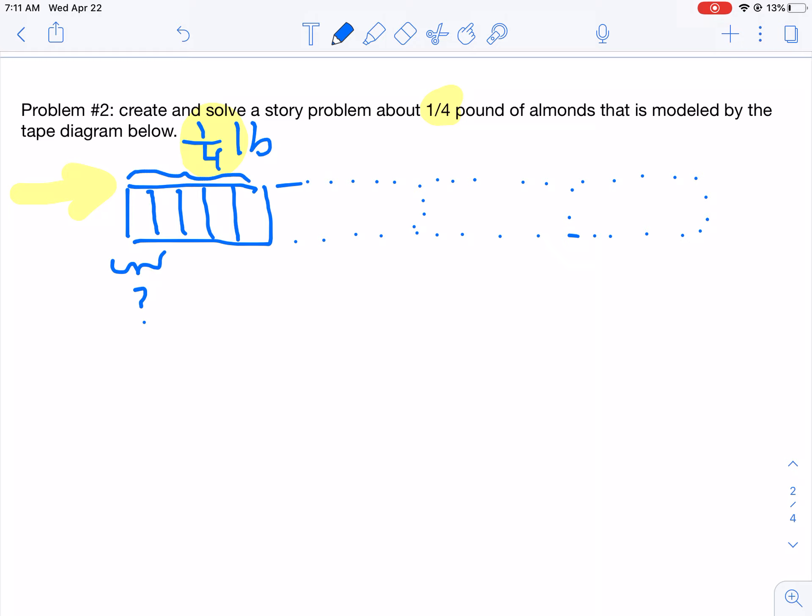What else can you tell about this tape diagram? Good. That one-fourth is being cut into or divided by—I'm going to erase those and use my highlighter—one, two, three, four, five parts. So one-fourth is being divided into five equal parts. There are five boxes there.